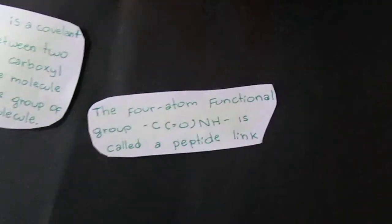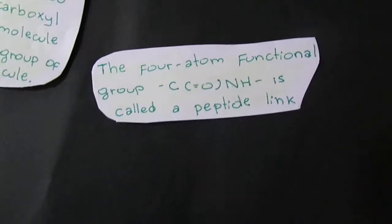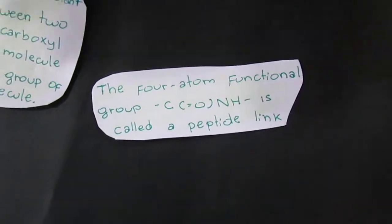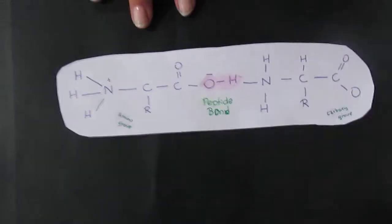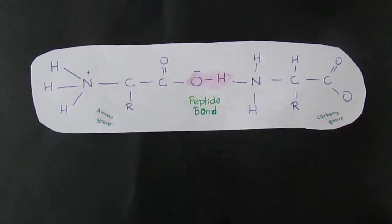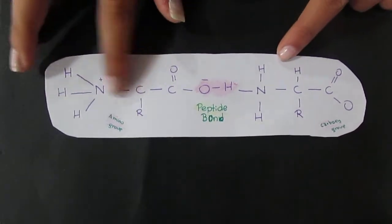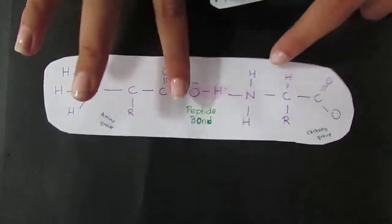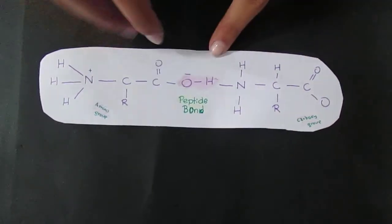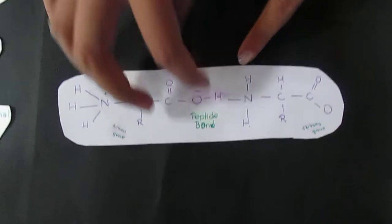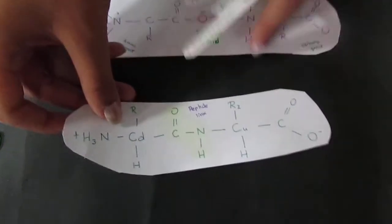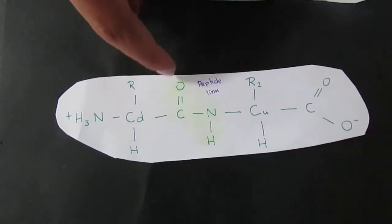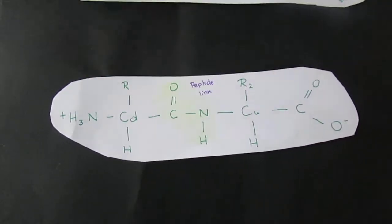The four-atom functional group CONH is called a peptide link. So now we're going to have another example of how it looks like. Here you see, this is the peptide bond. Here we have the amino group, here we have the carboxyl group. They are being connected together, and here is the peptide bond where water is released. This is the peptide link, the C-O-N-H.